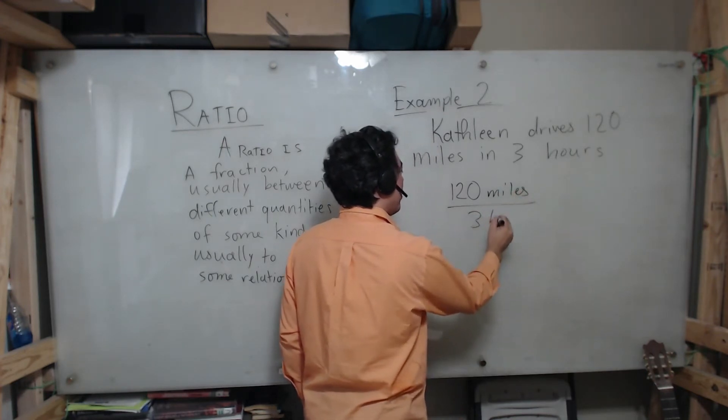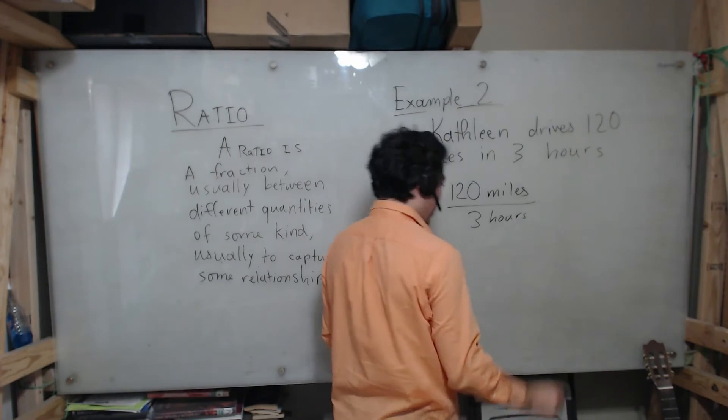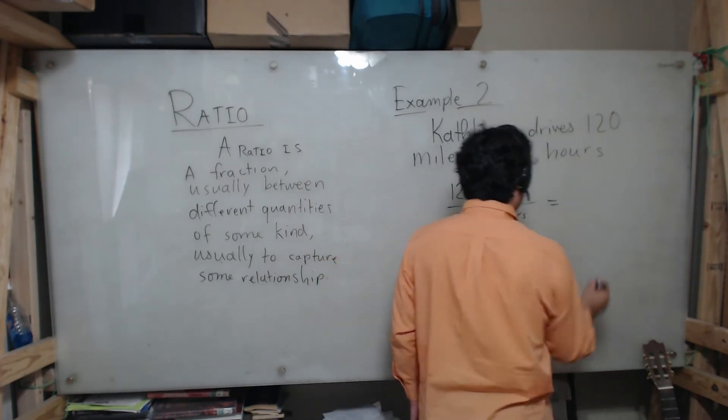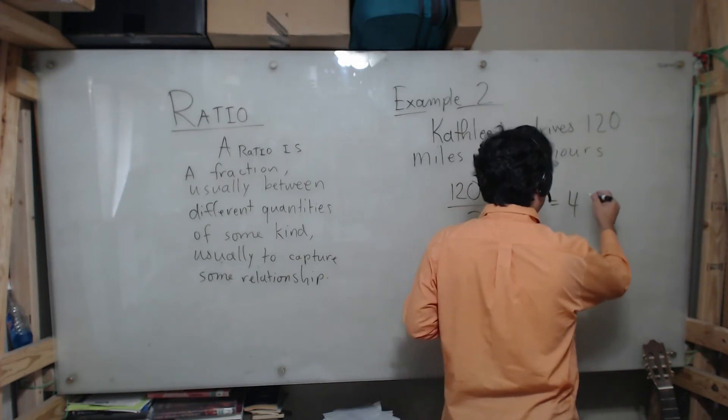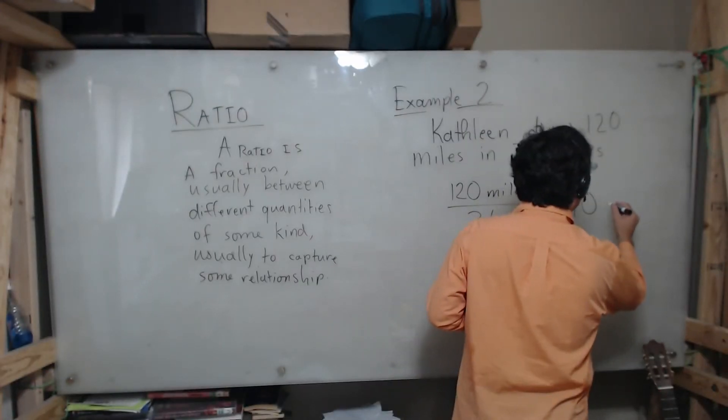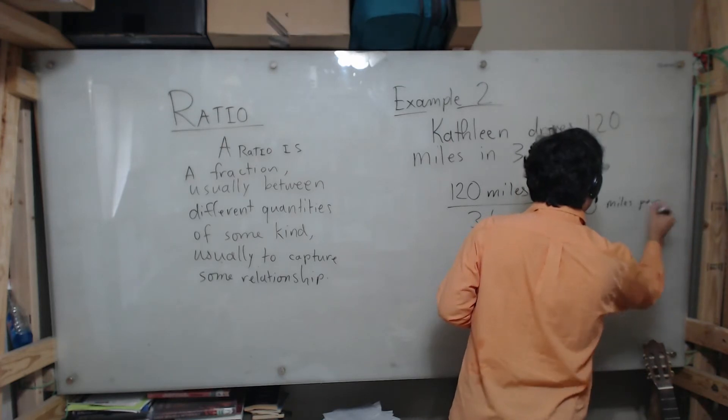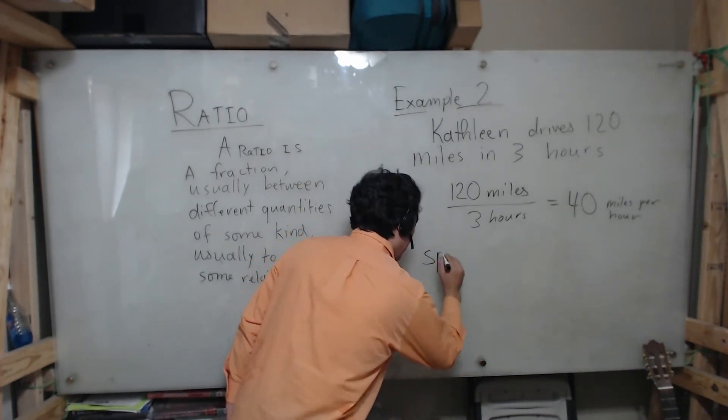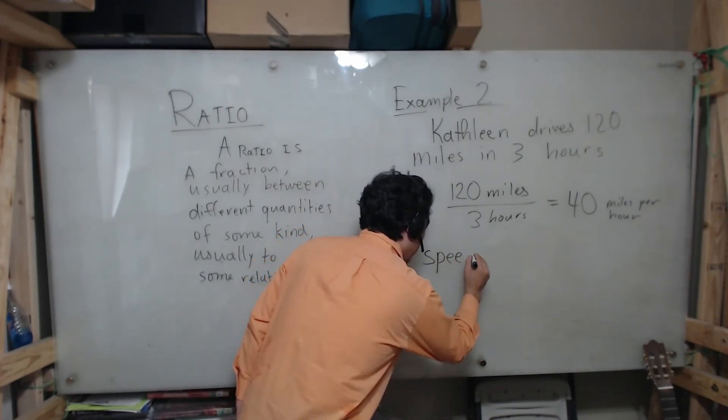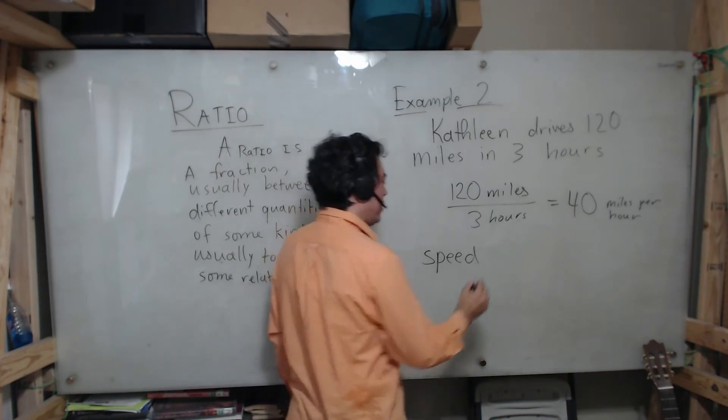Does this sound familiar? Yes, as you all might realize this is nothing but speed. If you divide 120 by 3 you get 40 and this is what it means: miles per hour. So speed is one of the ratios we deal with every day. We're going to write it down as an equation: speed equals the distance you travel divided by the time it took you to travel that distance.